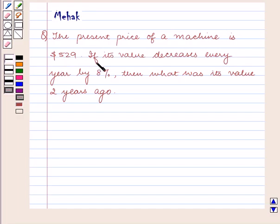If its value decreases every year by 8%, then what was its value 2 years ago? The compound interest formula is A = P(1 + r/100)^n.